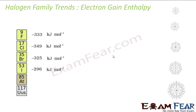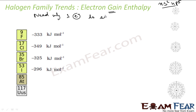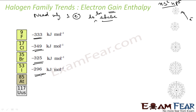The next trend is electron gain enthalpy. Electron gain enthalpy is the amount of energy released or required to gain an electron. Group 17 elements have configuration NS2NP5, meaning they need only one electron to be stable. They will happily accept one electron — in fact, they'll release energy to get that electron, because they will become stable and attain the noble gas state. Looking at the electron gain enthalpy values, all are negative, meaning energy is released when they gain one electron.